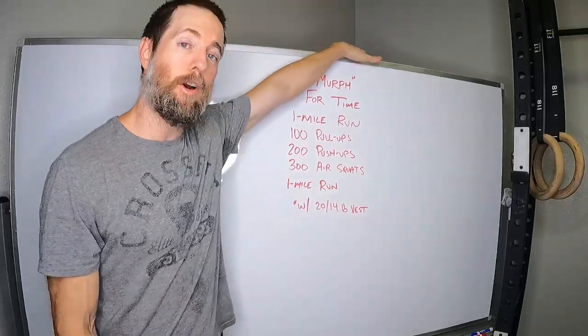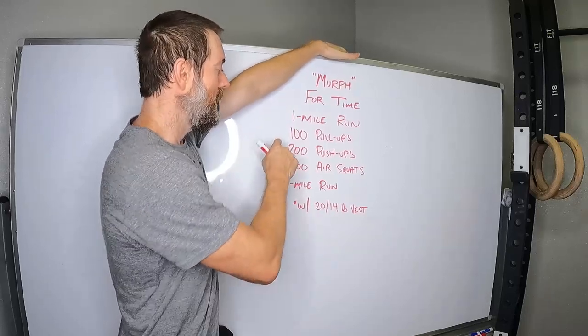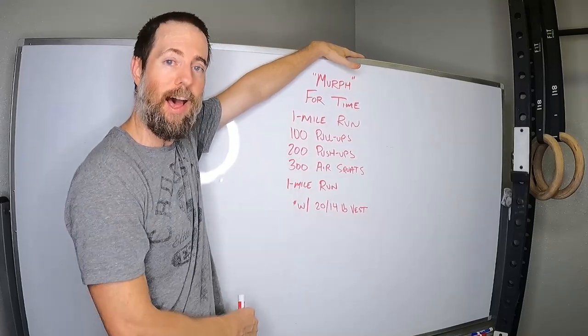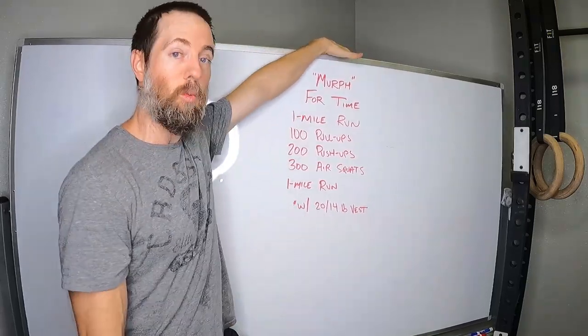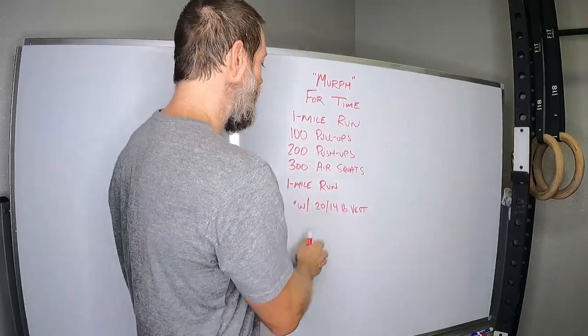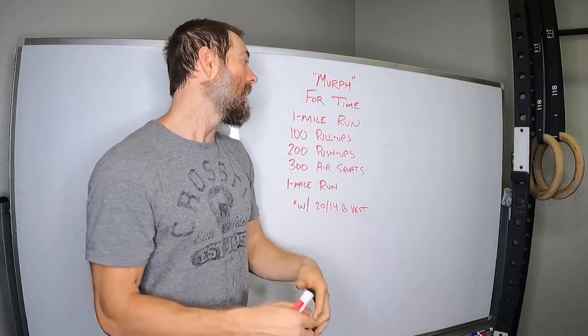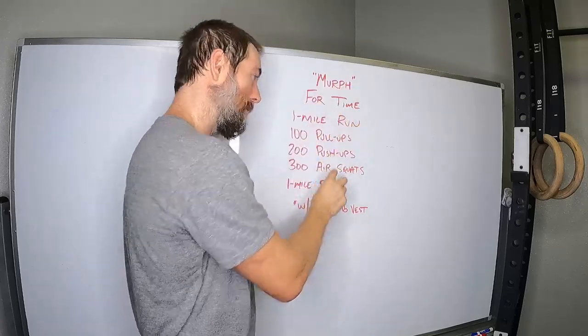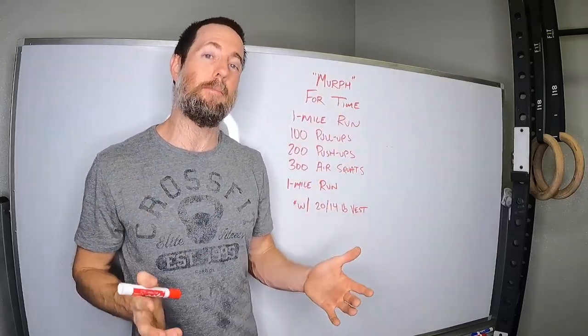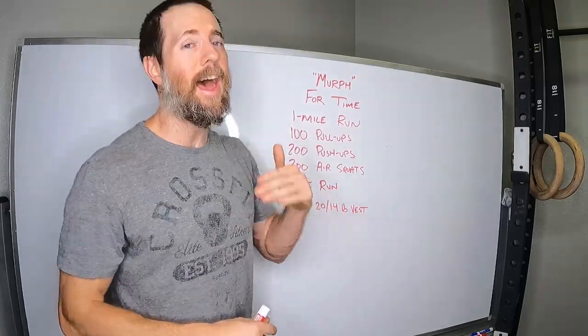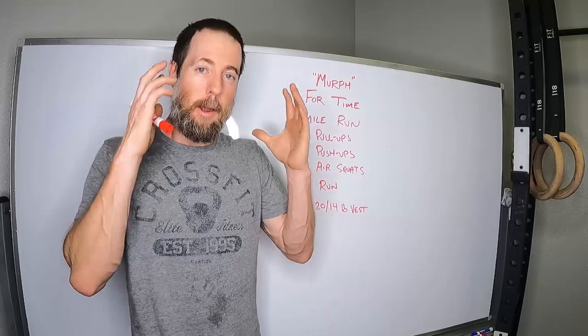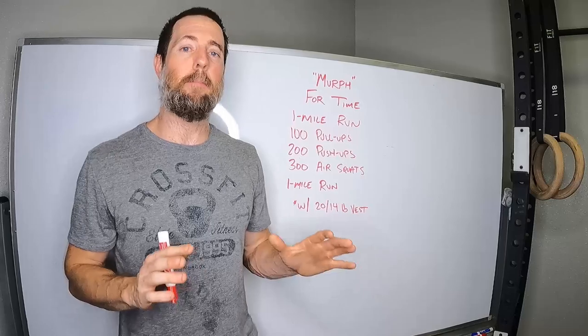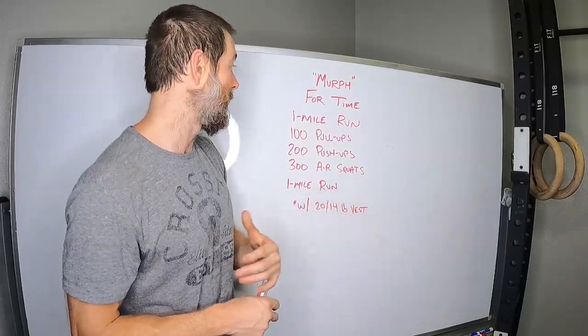This particular workout is called Murph. It's for time. It's a mile run, you do 100 pull-ups, 200 push-ups, 300 air squats, and a mile run. If you're very advanced, you might do this with a weight vest on. We scale it either without the vest. We mix and match how you do these reps. Some people do the mile with the vest, 100 pull-ups, and then after they're done with 100, they move on to the push-ups. How you do it doesn't really matter. The intent of this one is to have a really high-volume kind of grueling workout that makes us grind through as a way to pay tribute to the heroes in our lives.